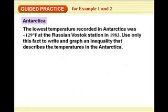Okay, so the guided practice, the lowest temperature recorded in the Antarctica was negative 129 degrees Fahrenheit at the Russian Volstek Station in 1983. Use only this fact to write and graph an inequality that describes the temperatures in the Antarctica. So, that's the lowest, so that means everything else has to be bigger than that, warmer than that. So, x is, in this case, going to be greater than, it won't get any colder, greater than or equal to negative 129 degrees Fahrenheit.